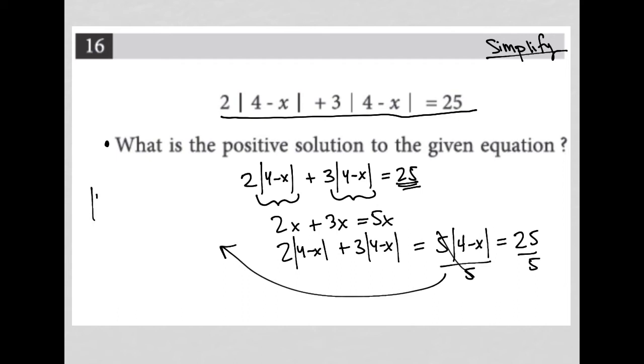So I'm left with absolute value of 4 minus x equals 5. And now I have to solve my absolute value equation, which means I have to create two separate equations. The first looking exactly like the original,